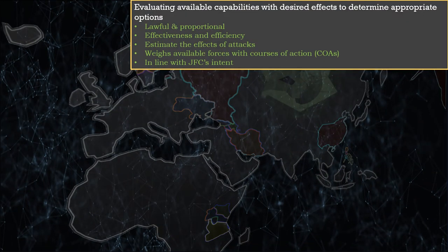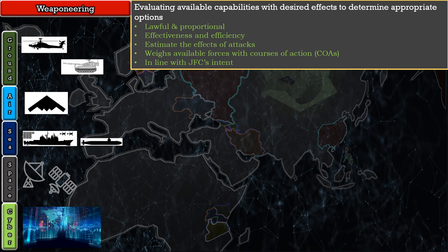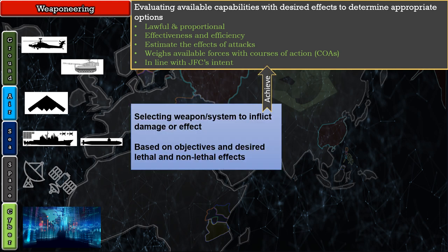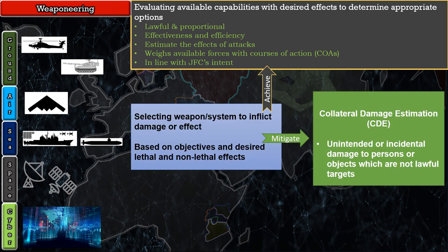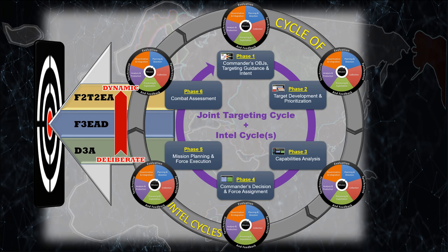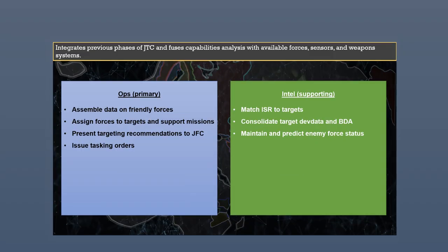Cycling forward to Phase 3, things become more operations-focused with commander's decision and force assignment. In this phase, the commander approves the high payoff target list, and the staff begins planning effects that are lawful and proportional, effective, efficient, in line with the mission and commander's intent — weighing available forces with courses of action and estimating the effects of attacks. The entire point of this phase is weaponeering: choosing the right platform with the right payload to achieve desired outcomes while seeking to avoid collateral damage against non-combatants.